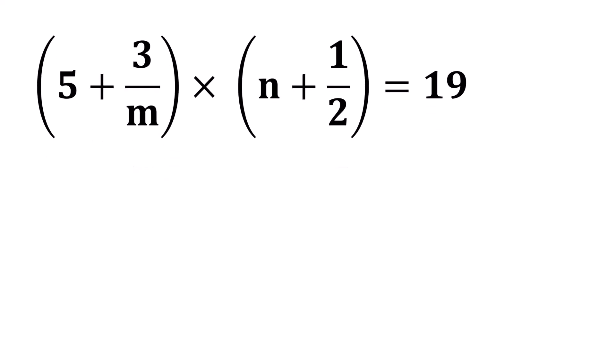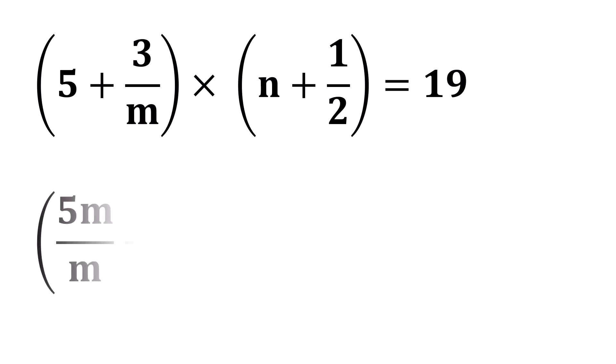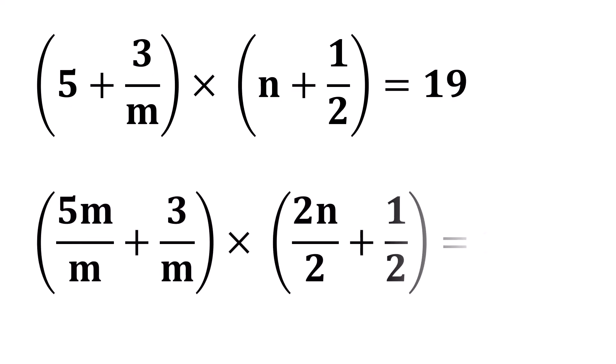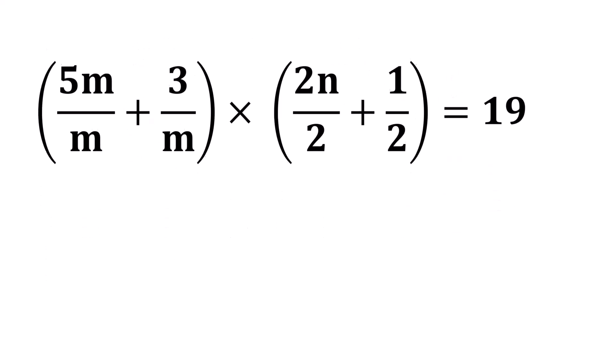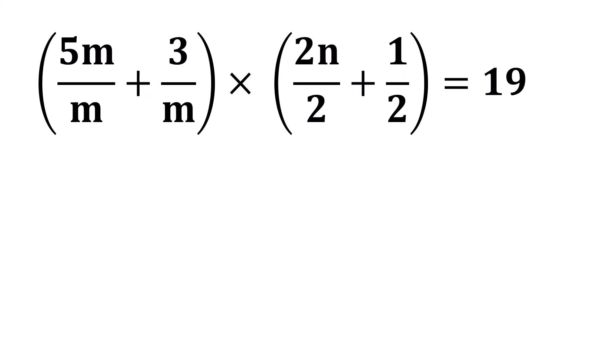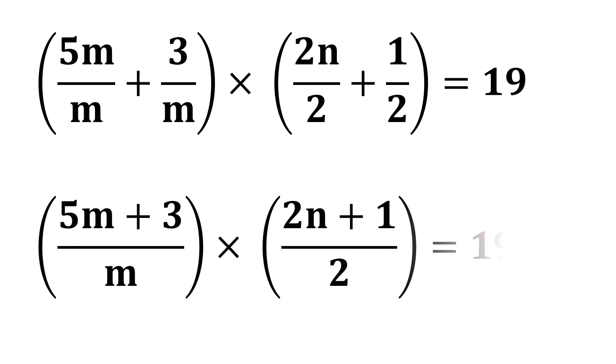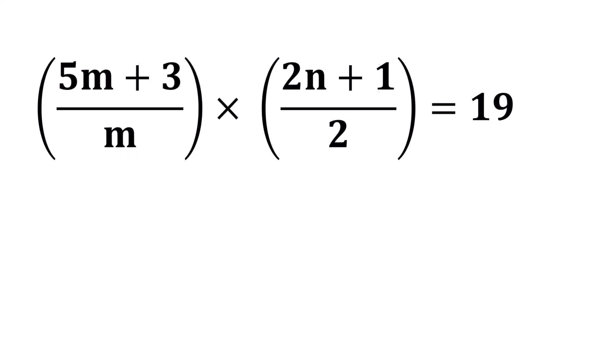Now for simplification, first term can be written as 5m over m plus 3 over m multiplied by 2n over 2 plus 1 over 2 equals 19. Now we can write 5m plus 3 over m multiplied by 2n plus 1 over 2 equals 19.